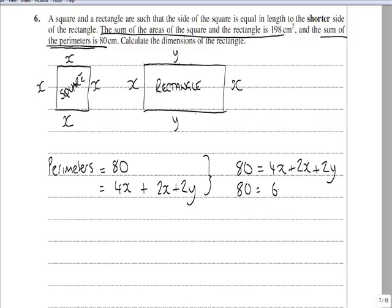So 80 is equal to 6x plus 2y. And we can see by rearranging, taking 6x of both sides and then dividing through by 2, that in fact our longest side of the rectangle is equal to 40 minus 3x.